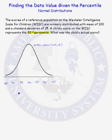Here we have an appropriately labeled normal distribution. The scores are normal with mean 100 and standard deviation of 15. We label the mean, 1, 2, 3 standard deviations above the mean, and 1, 2, 3 standard deviations below the mean.